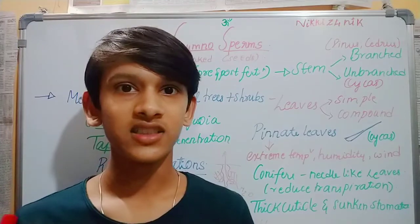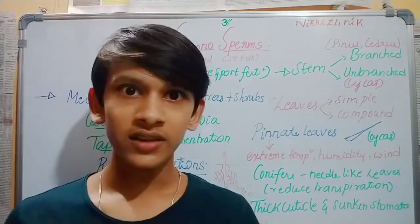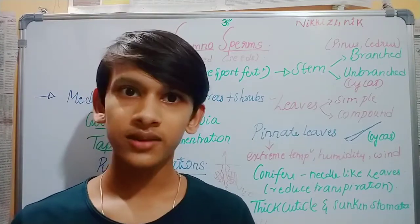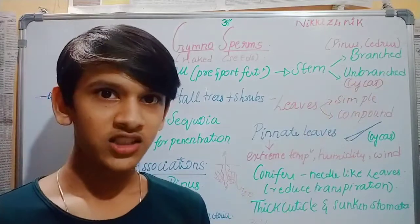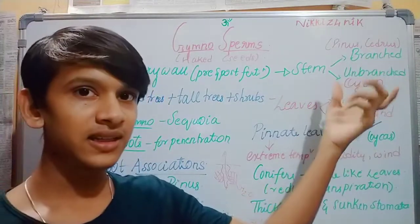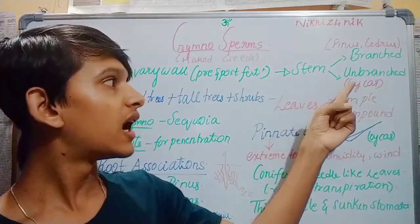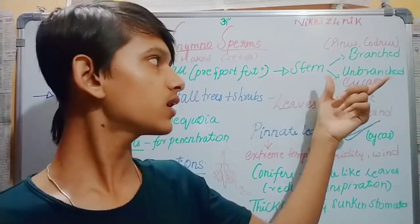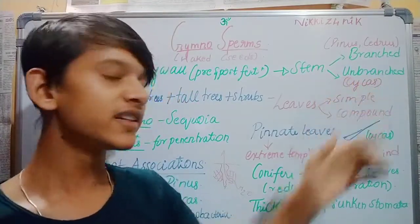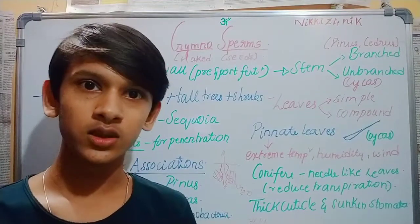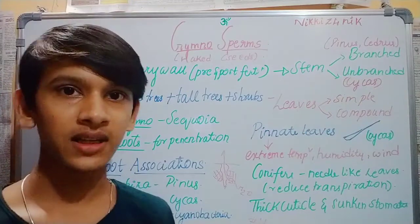Now, how is the stem of gymnosperms? Stems can be branched or unbranched. Branched examples include pinus and cedrus — you can see that these trees have many branches. Unbranched examples include cycas — cycas trees are unbranched, with just one main stem and leaves at the top.